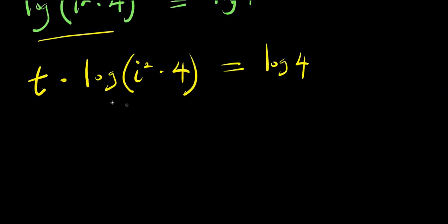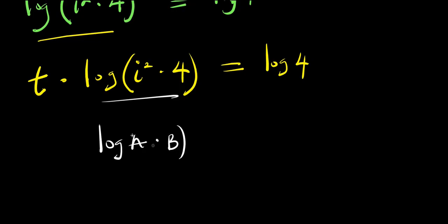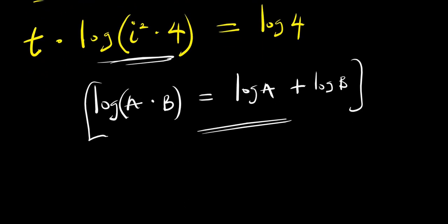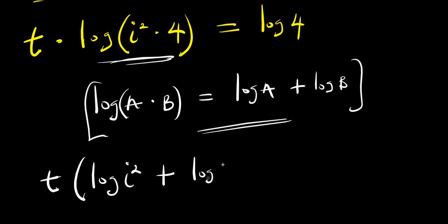Right now we have log of a times b, and we apply the product property: log(a×b) equals log a plus log b. Applying this identity, we get t times (log i squared plus log 4) equals log 4.